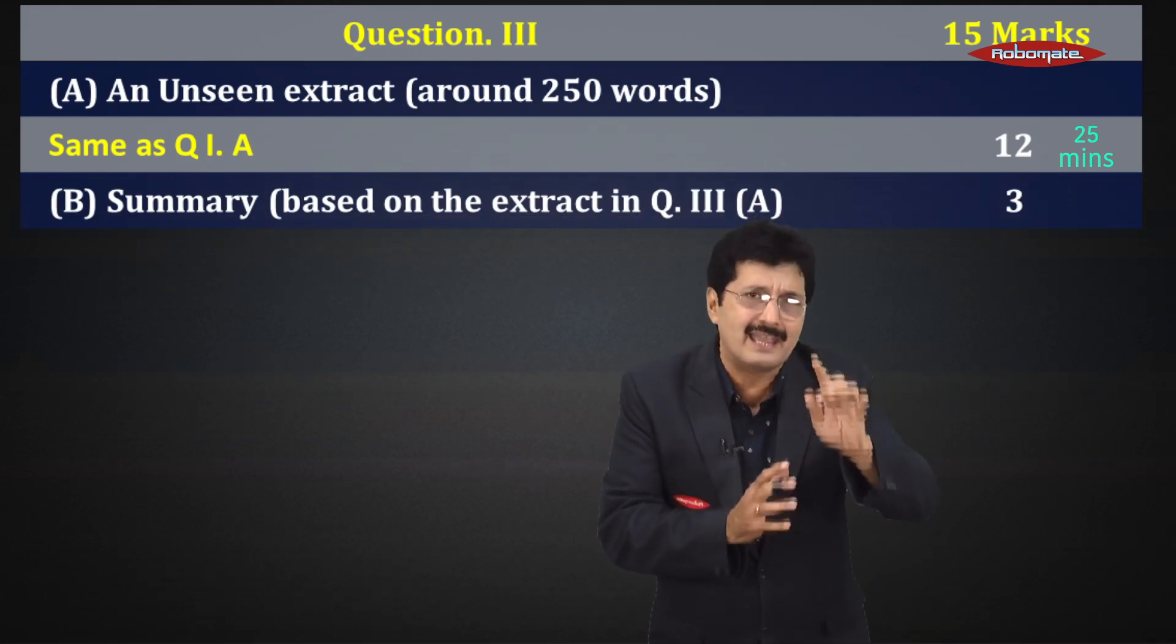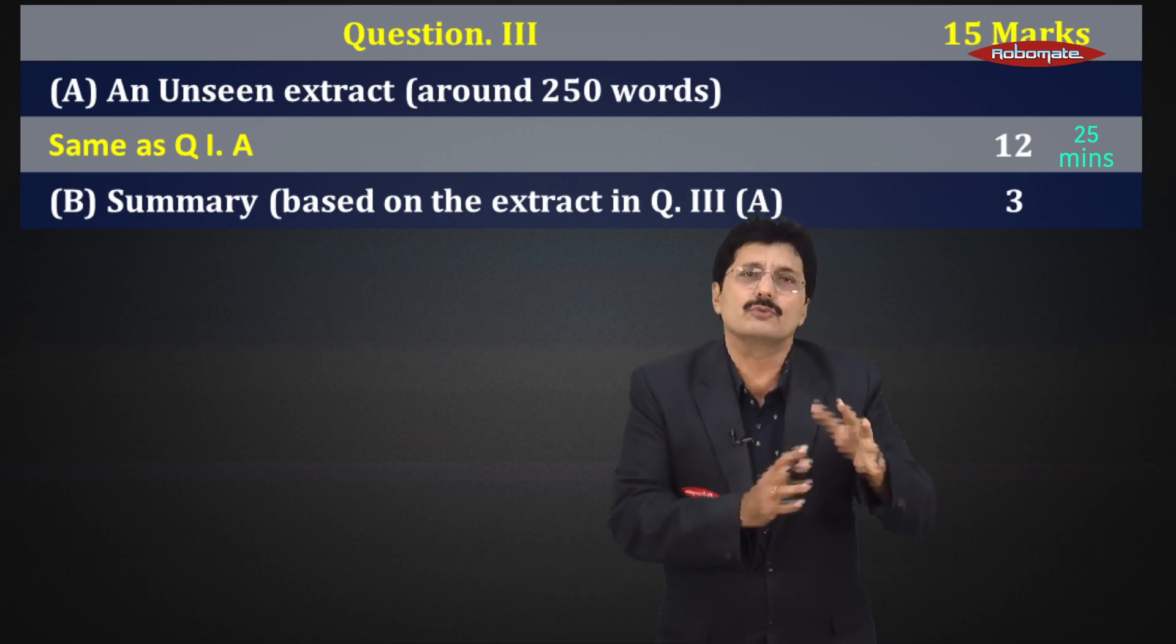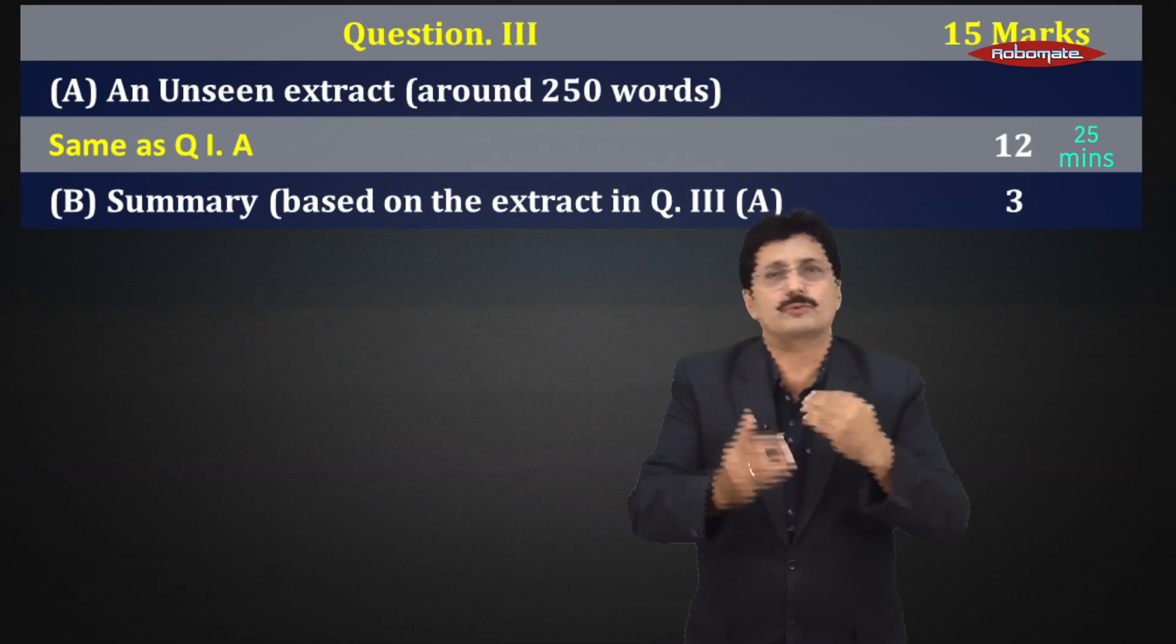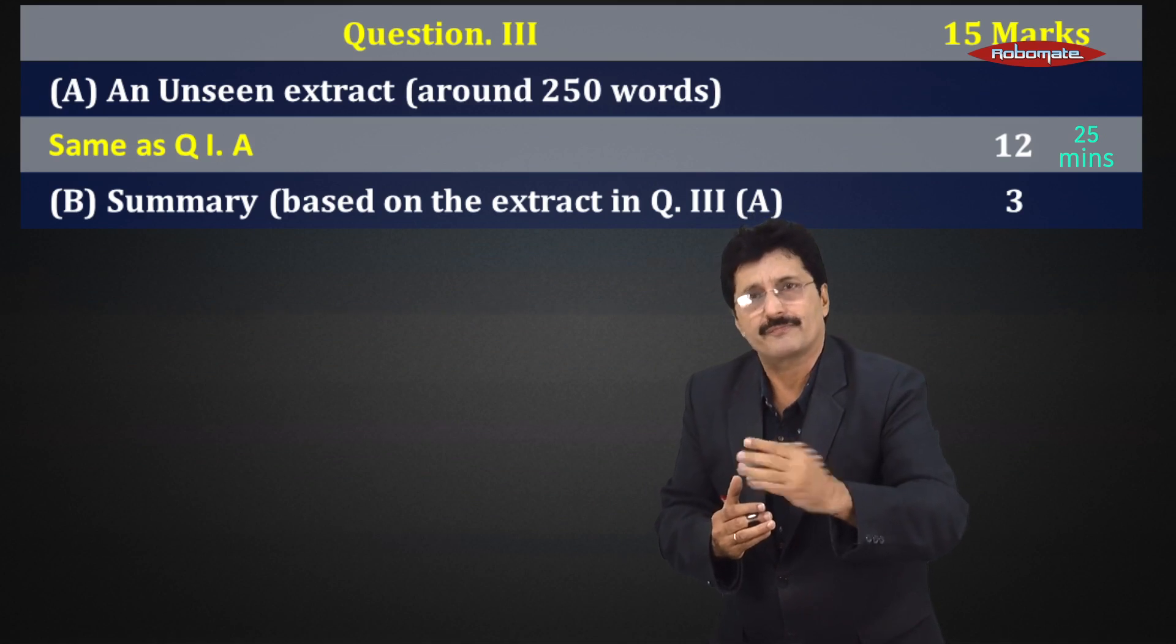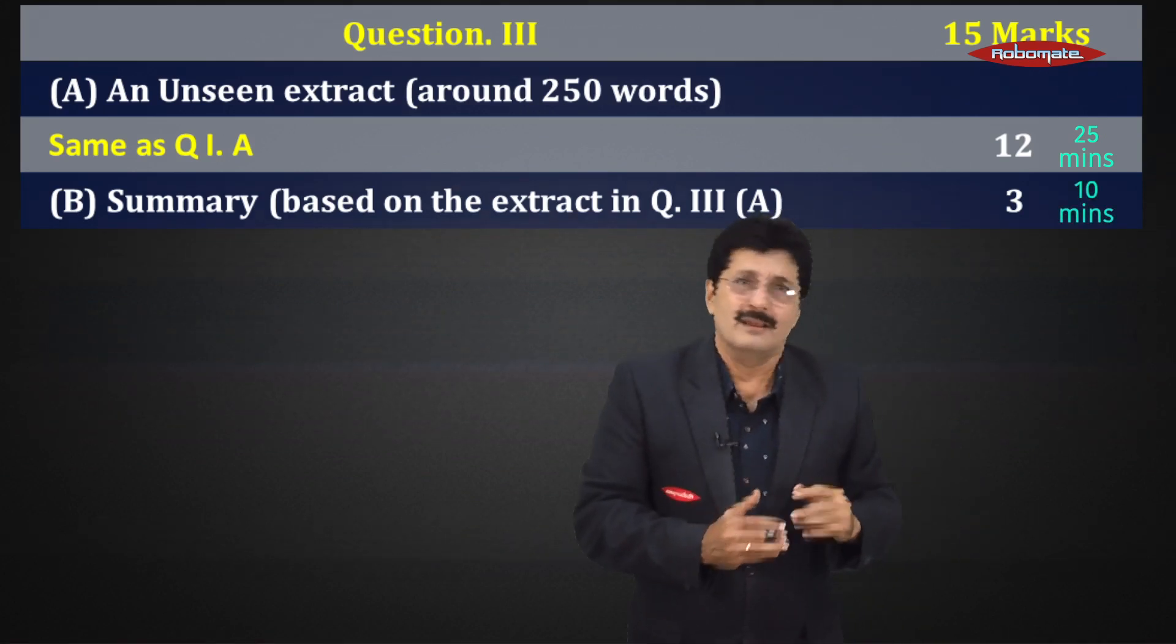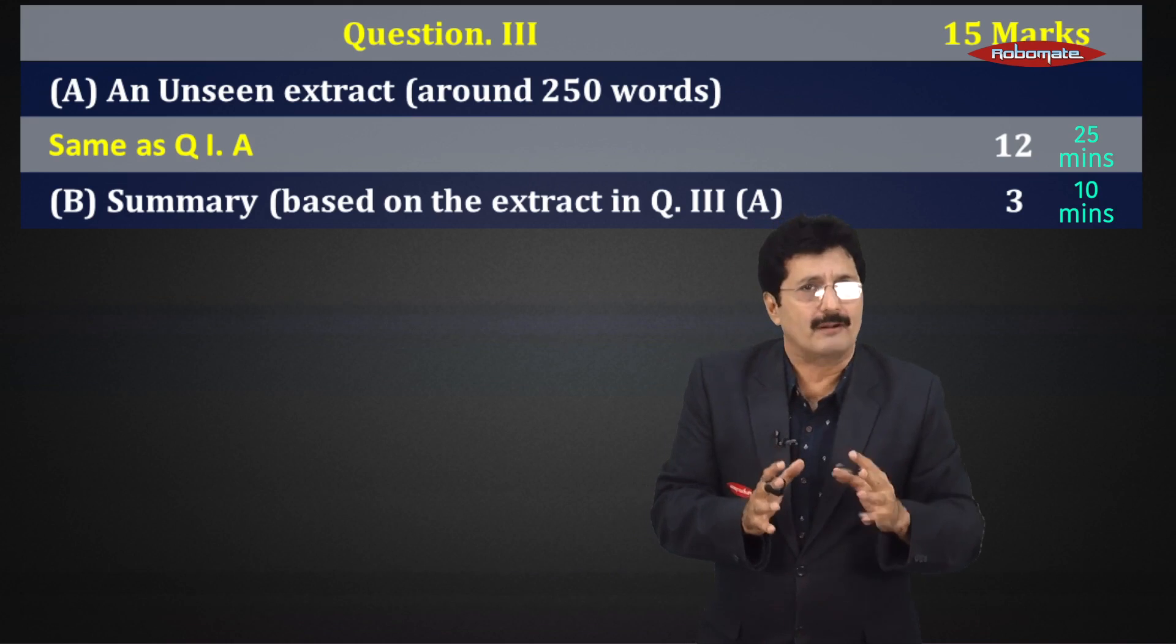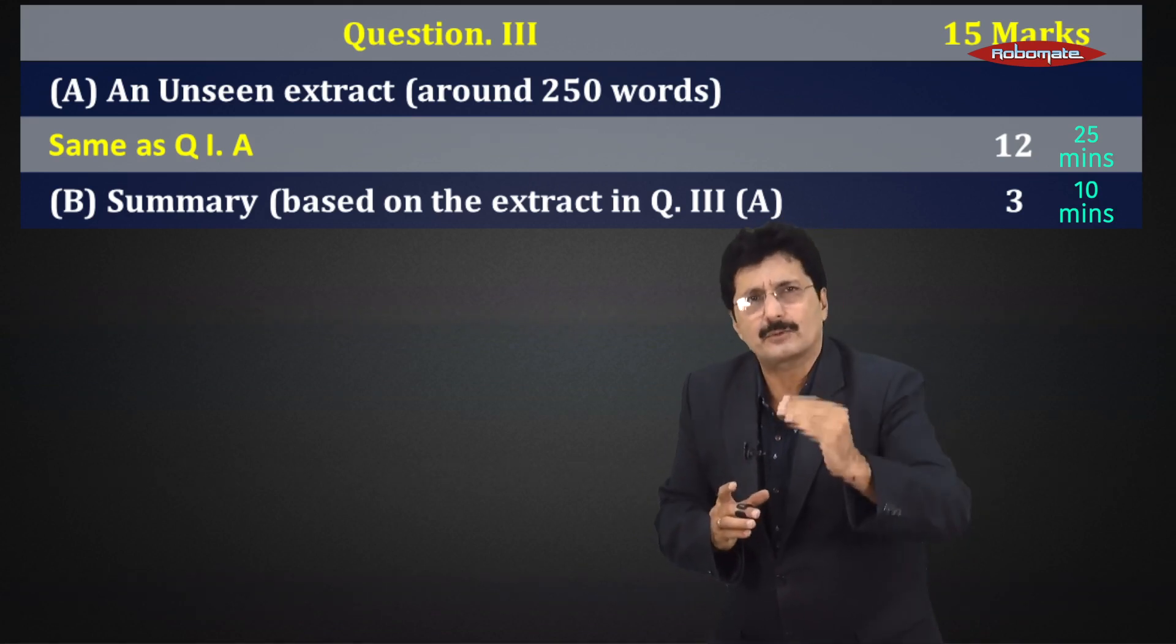And 3B is a guided summary, yes guided again. You will be given the points which you will have to expand into a paragraph. Three marks for that, maximum 10 minutes. Extremely scoring paper, 45 marks done.